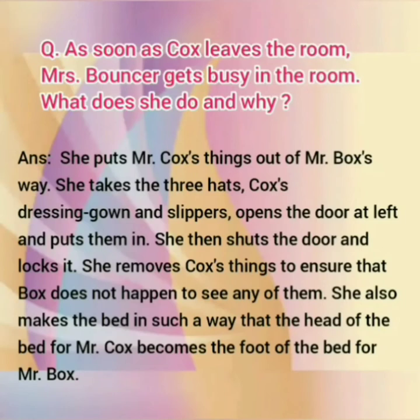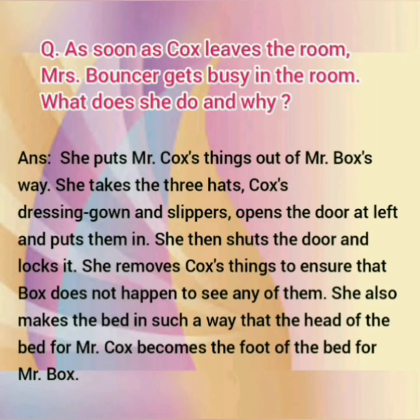As soon as Cox leaves the room, Mrs. Bouncer gets busy in the room. What does she do and why? She puts Mr. Cox's things out of Mr. Box's way. She takes the hat blocks, Cox's dressing gown and slippers, opens the door at left and puts them in. She then shuts the door and locks it, removing Cox's things to ensure that Box doesn't happen to see any of them. She also makes the bed in such a way that the head of the bed for Mr. Cox becomes the foot of the bed for Mr. Box.